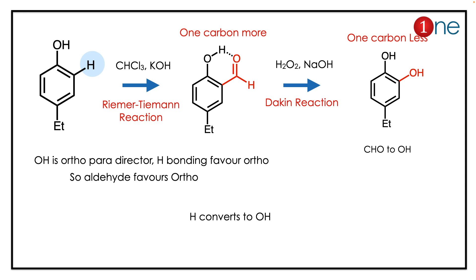The two named reactions are the Reimer-Tiemann reaction and the Dakin reaction. The first step, the Reimer-Tiemann reaction, uses chloroform and potassium hydroxide. It involves abstraction of a proton and conversion — the aldehyde hydrogen is converted, with a new CHO carbon added. In the next step, you use hydrogen peroxide and NaOH, which involves the Dakin reaction.